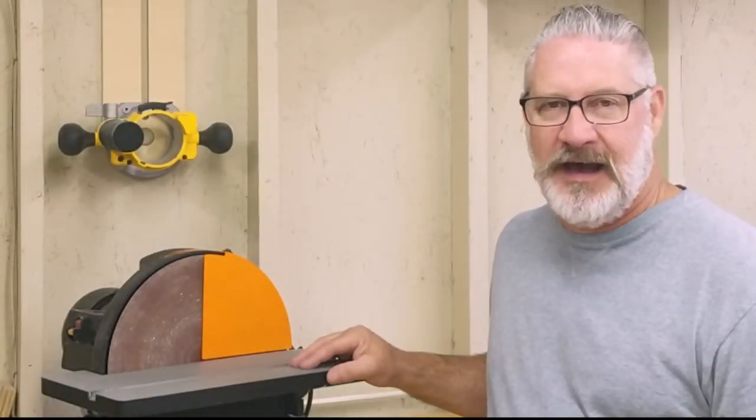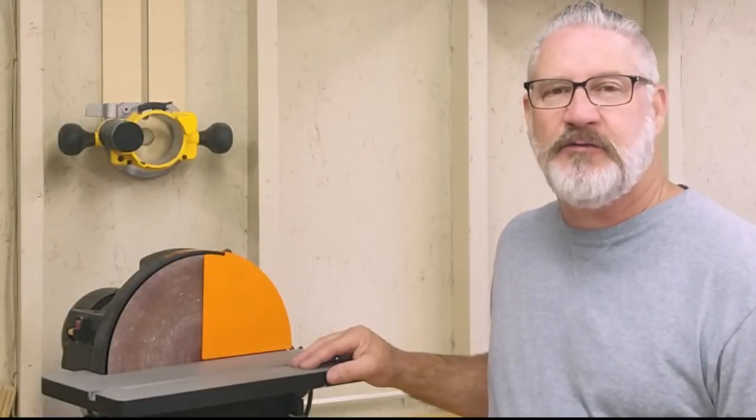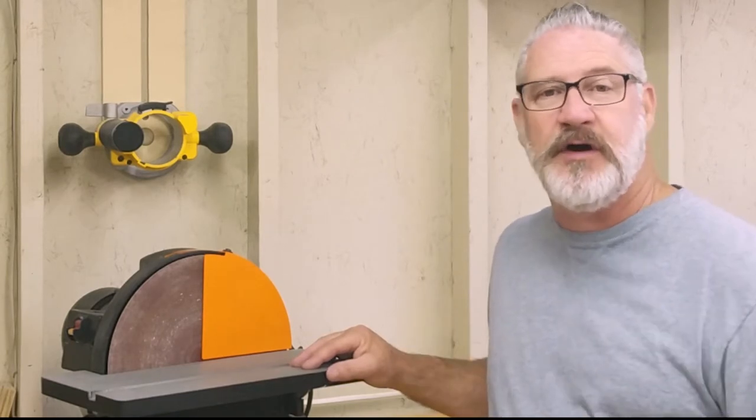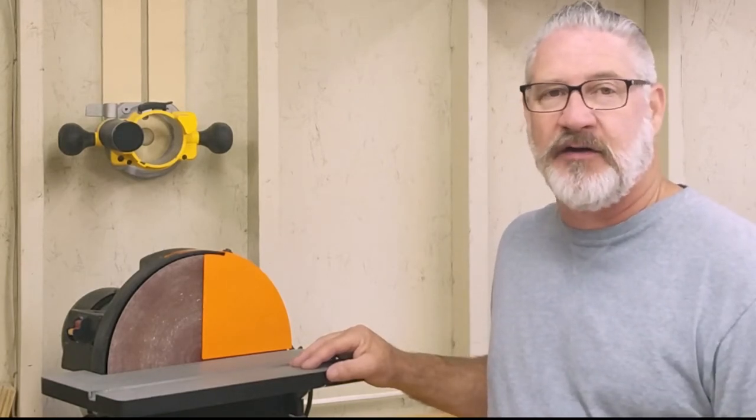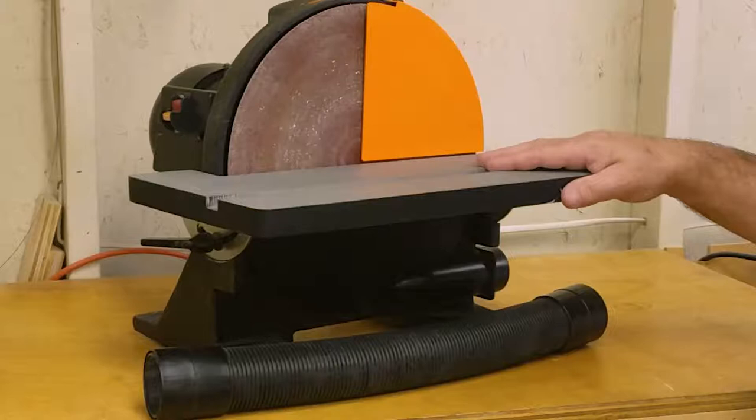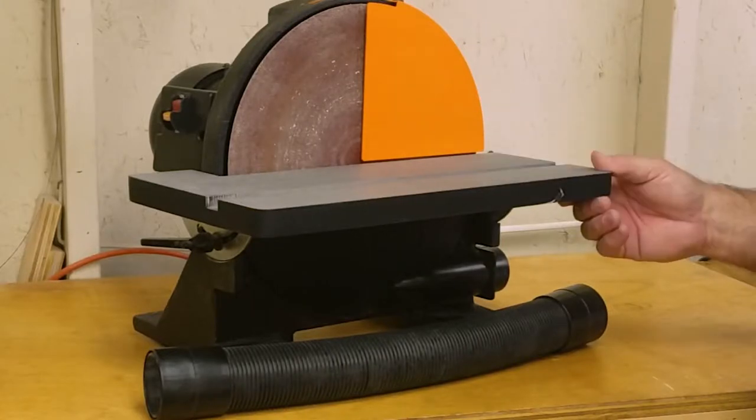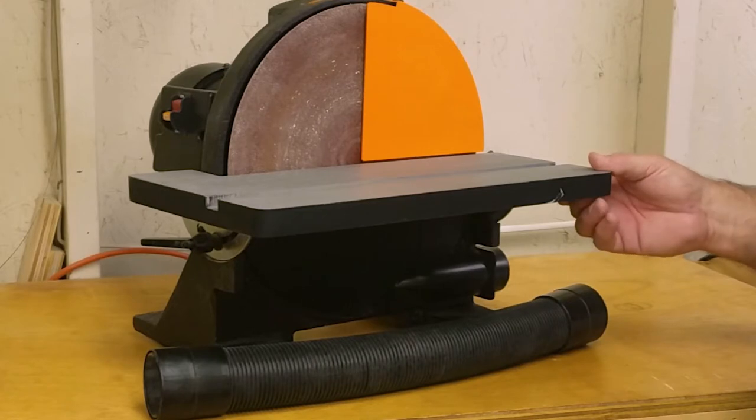Welcome back to my shop everyone. I'm Bobby Sharp. Today's episode we will be reviewing this Wynn 12 inch disc sander model 65812. I purchased this around mid 2020 and obviously I've been using it ever since that time.